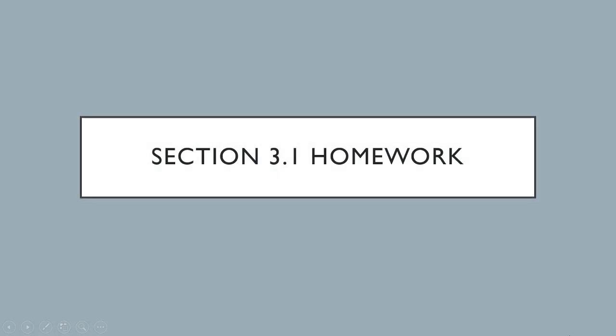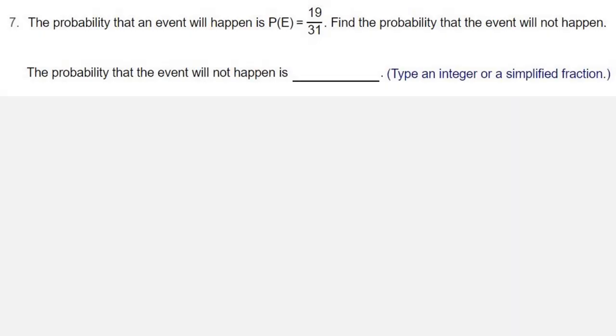We're looking at homework from section 3.1. This is question number 7. The probability that an event will happen is probability of E equals 19 over 31. Find the probability that the event will not happen.